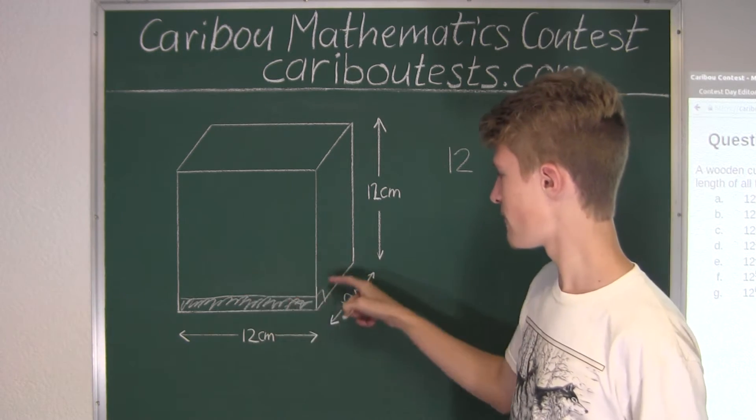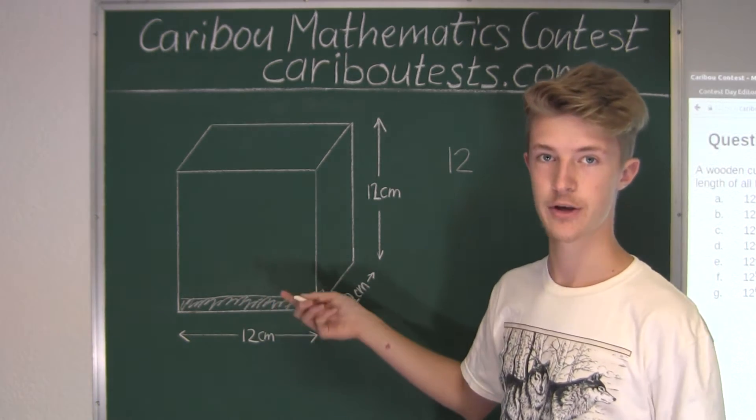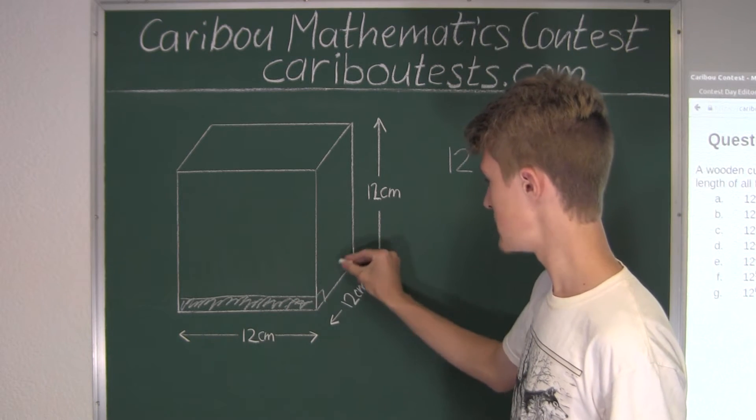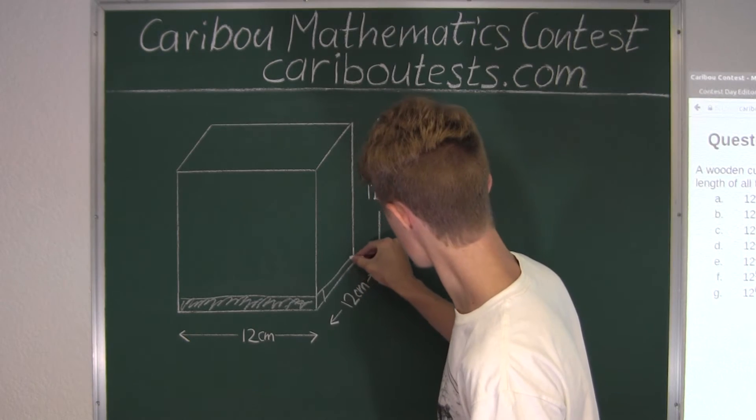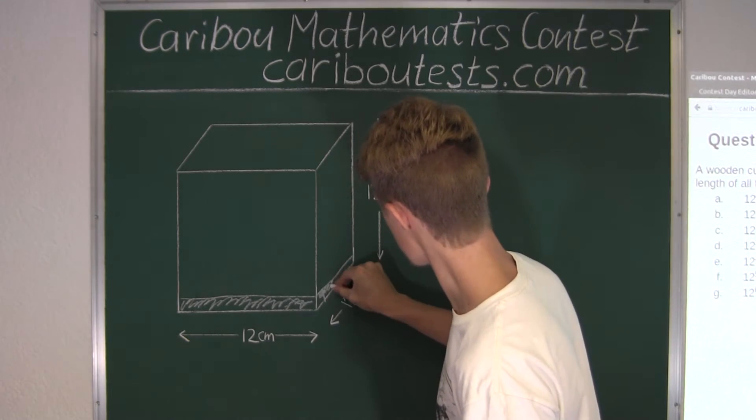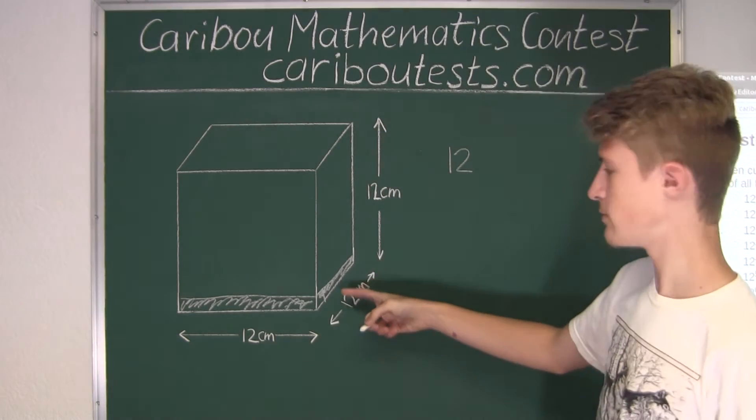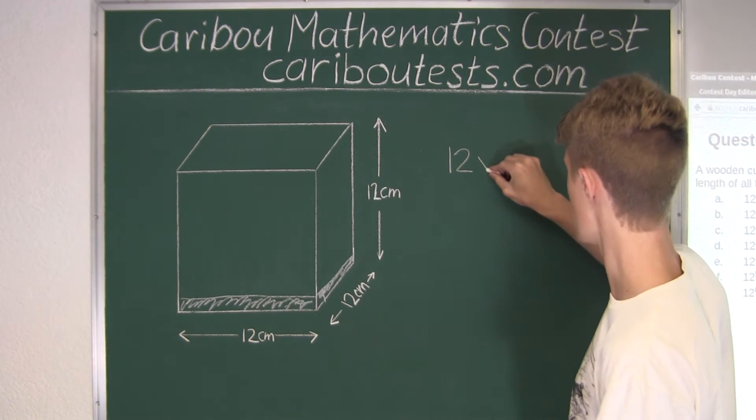And now here, if we wanted to fill the whole bottom layer with cubes, well then here we would need 12 lines. Okay, so then again we have another 12, so 12 times 12.